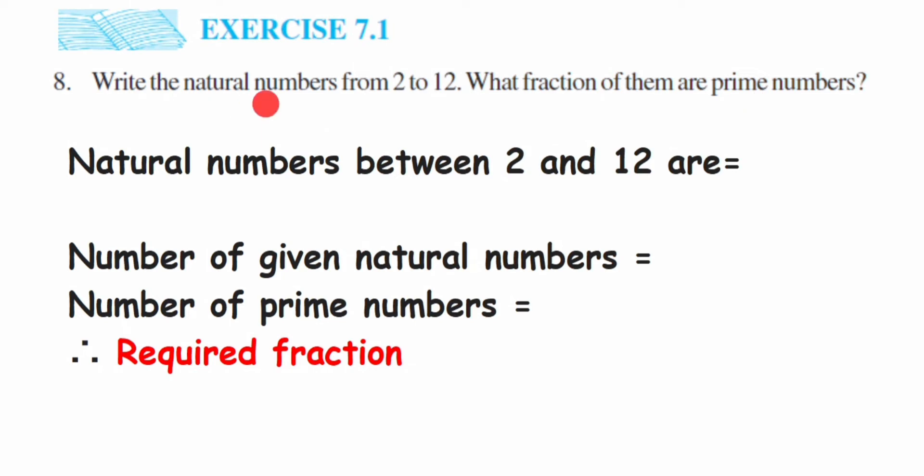So let us write down that. Here we're going to include 2 and 12 also because they're not saying write the natural numbers between. If it was between, we would not include 2 and 12. Since they're saying write the natural numbers from 2 to 12, we're going to include 2 and 12 also.